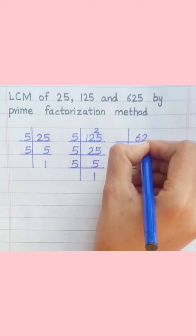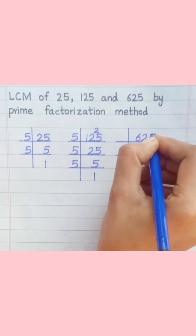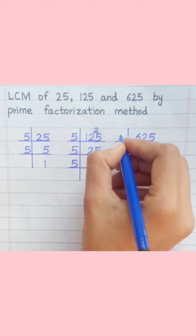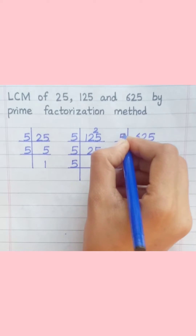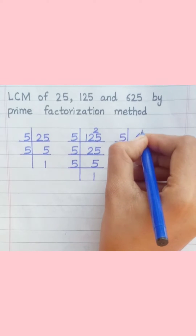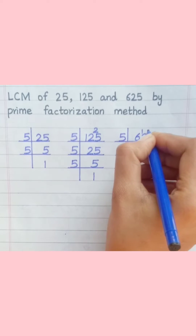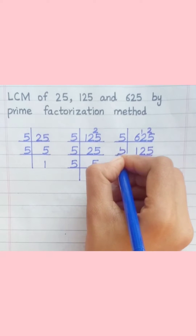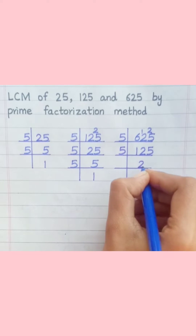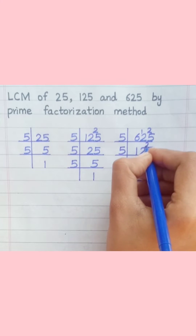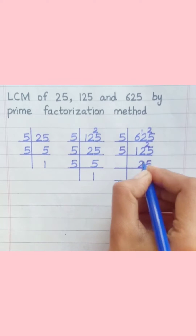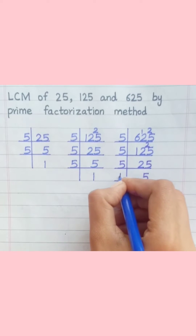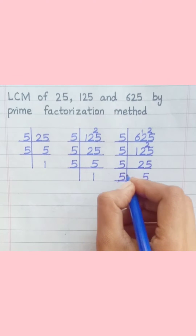625: 5 ones are 5, 5 twos are 10, 5 fives are 25, 5 twos are 10, 5 fives are 25, 5 fives are 25, 5 ones are 5. So 625 equals 5 multiply 5 multiply 5 multiply 5.